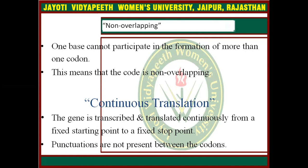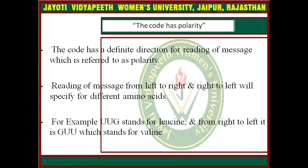Regarding continuous translation, the gene is transcribed and translated continuously from a fixed starting point to a fixed stop point — punctuations are not present between the codons. The code also has polarity: a defined direction for reading the message. Reading from left to right versus right to left will specify different amino acids. For example, UUG stands for leucine, but from right to left it is GUU which stands for valine.